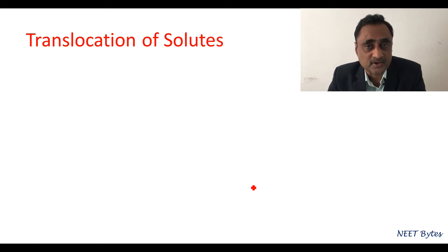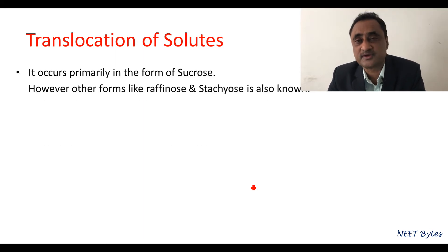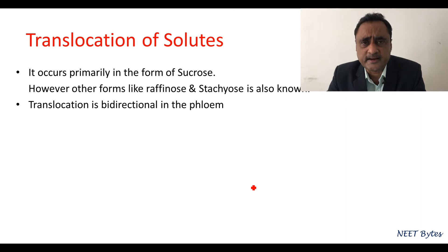The entire translocation of solutes occurs through sucrose. However, there are other forms like raffinose or stachyose, primarily in grapes. But in 90% of cases, translocation occurs in the form of sucrose only.